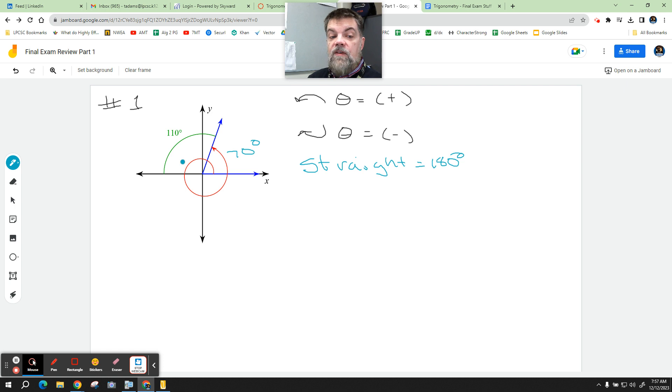But I have one full rotation in the positive direction. So really what I have is 360 degrees, right? That's going from here all the way around one full rotation plus the additional 70 degrees. And so that whole thing adds up to 430.